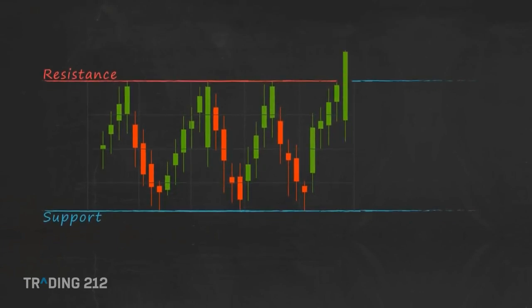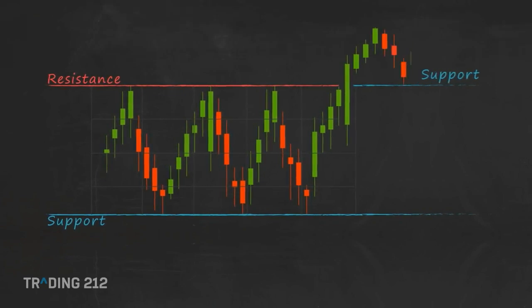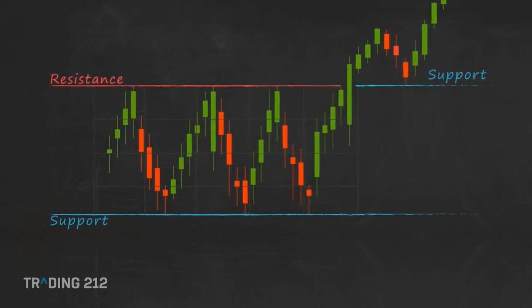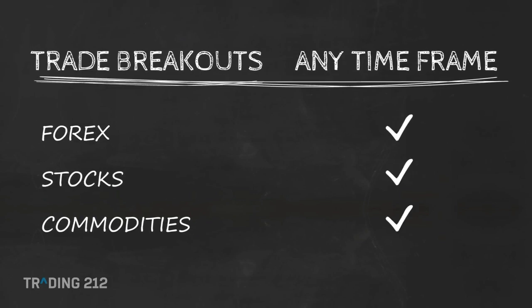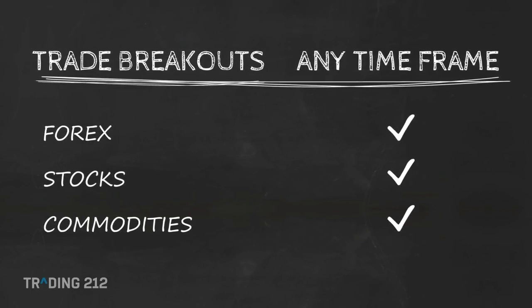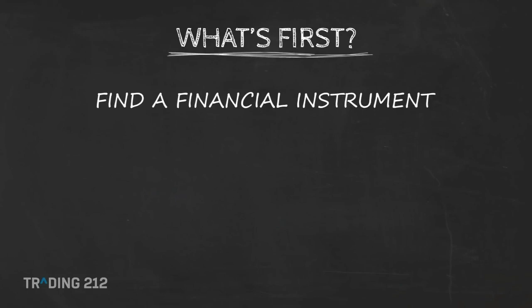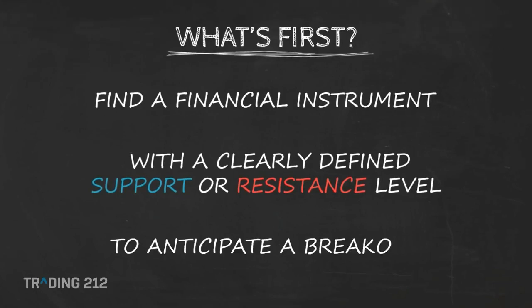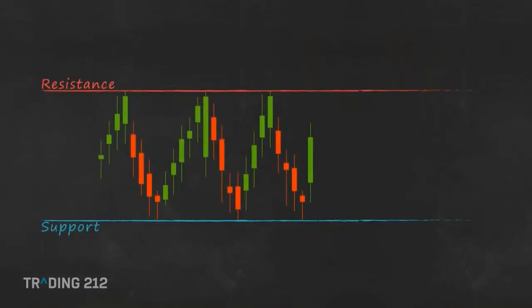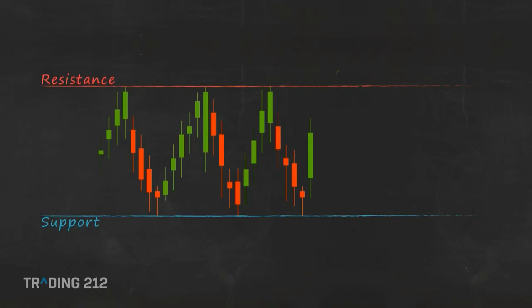Let's say the price breaks out above the resistance level. At this moment the resistance line might become a new support level as the supply and demand has shifted, so most likely new levels of support and resistance will be established. So here's the general concept to trading breakouts: you can use the breakout strategy to trade forex, stocks, or commodities and it works with any time frame. First, you need to find a financial instrument — a currency pair, stock, or commodity — with a clearly defined support or resistance level. However, a trading range created by both a support and resistance level is more beneficial as you can take advantage of the breakout in either direction.